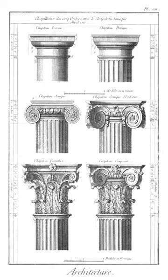Corinthian order: one of the three orders or organizational systems of ancient Greek or classical architecture, characterized by columns which stood on the flat pavement of a temple with a base, their vertical shafts fluted with parallel concave grooves, topped by a capital decorated with acanthus leaves that flared from the column to meet an abacus with concave sides at the intersection with the horizontal beam that they carried.